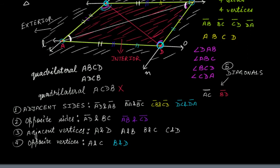What does that mean? If you have points x, y, z, p, and q placed outside the quadrilateral, then all these points x, y, z, p, and q are exterior to this quadrilateral.